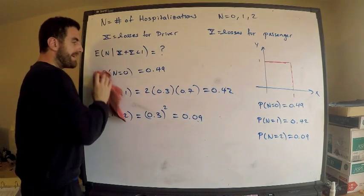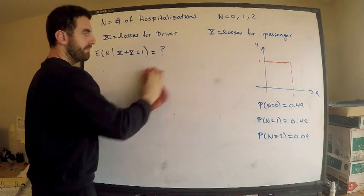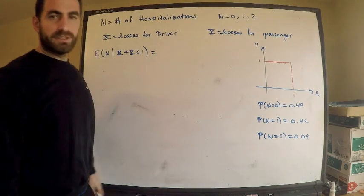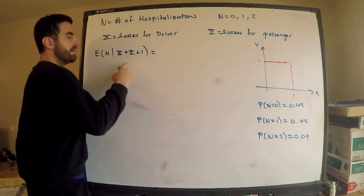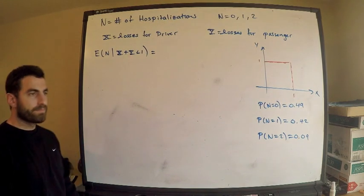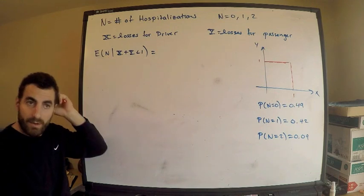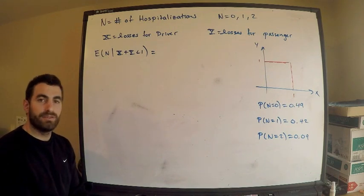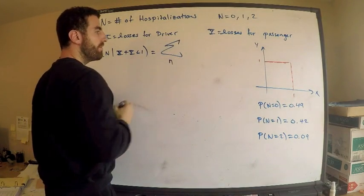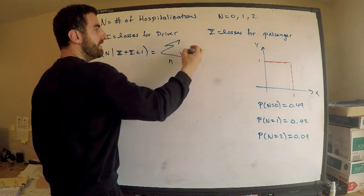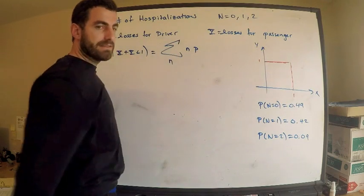Whenever you're asked to compute conditional expectation, immediately write down the definition of conditional expectation. The definition here is the following. Something you need to think about is what kind of random variable you have. N is the thing I want the expected value of — N is discrete. That means I will not have an integral, I'll have a sum. I want to sum up over all of the N's.